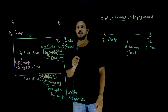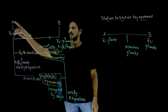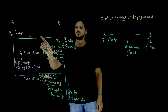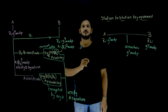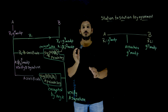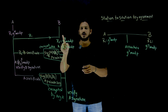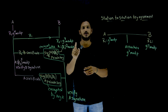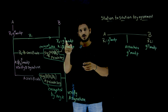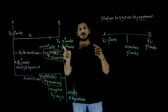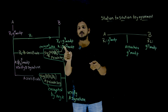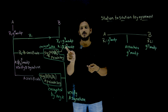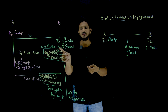Suppose A and B want to exchange the key. A generates R1 = G^X mod P, and R1 is sent over the internet. When it reaches B, B generates R2 = G^Y mod P. Because B received R1, it can also generate the key value: K = R1^Y mod P.